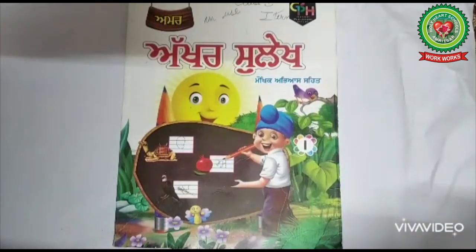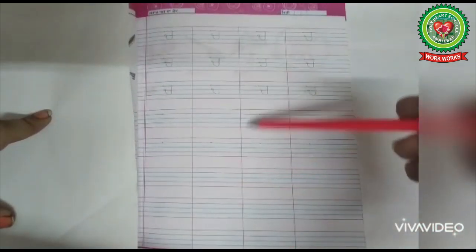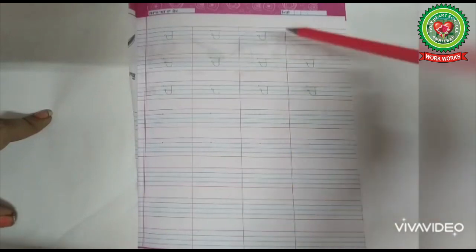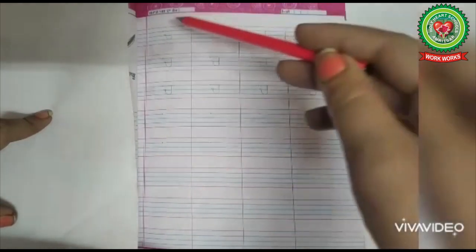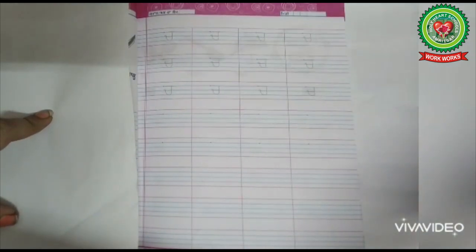So for that, take out your Akharsu Lake book and open page number 31. On page 31 you have to write Chacha. Before writing Chacha, don't forget to write today's date and Astro W here. For writing Chacha, let us revise once again how to write Chacha.